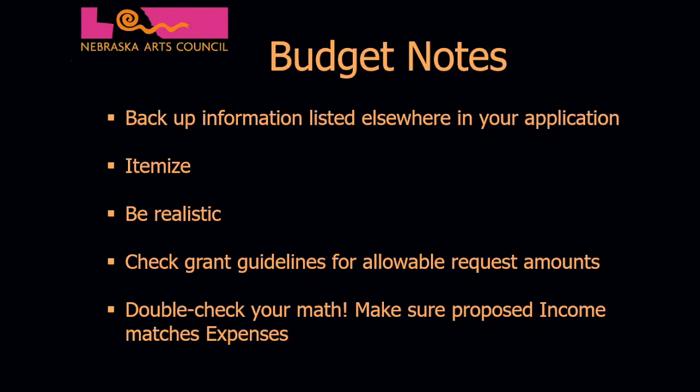Your budget should be realistic — reviewers can often spot budget items that seem unrealistic or inflated. NAC budgets are cash budgets and may only include actual cash expenses or income. However, if there are in-kind contributions to your project, such as donated space for your venue, we recognize that they add great value and we encourage you to discuss these in the narrative or in the text box of your budget worksheet.